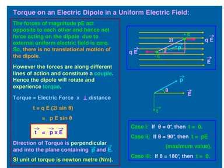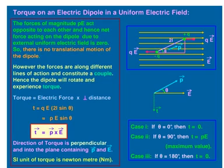Hence, the net translatory force on a dipole in a uniform electric field is zero. But the two equal and opposite forces act at different points of the dipole, so they form a couple which exerts a torque.